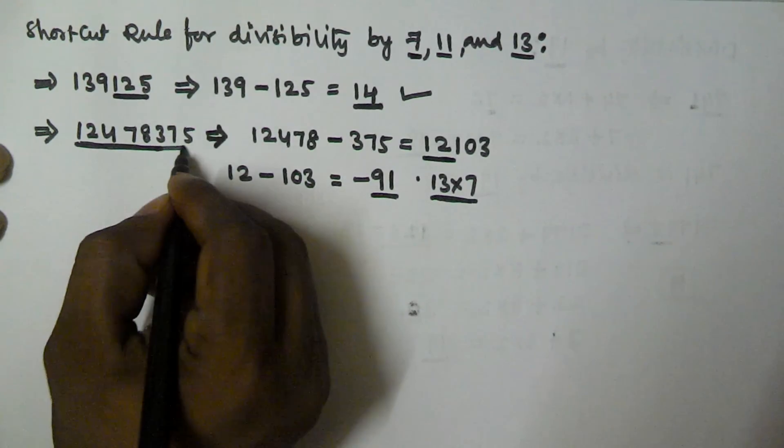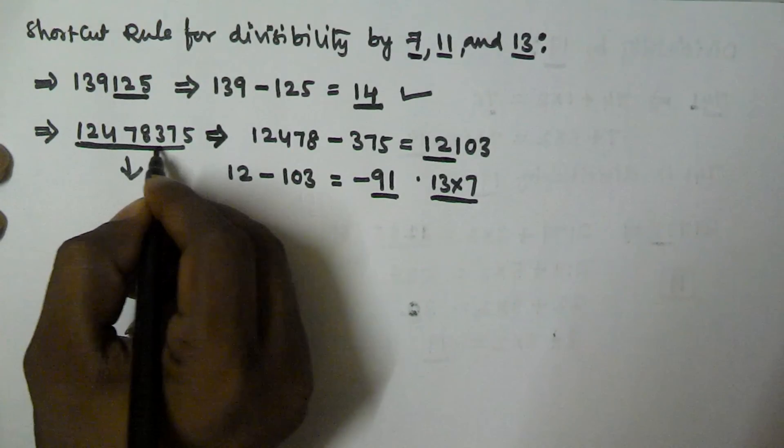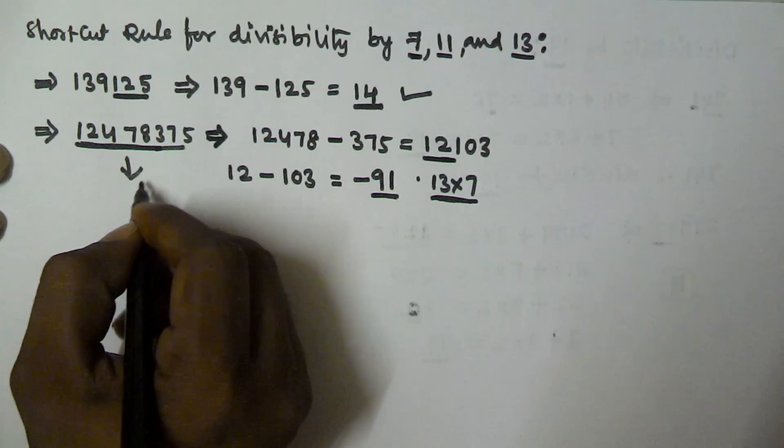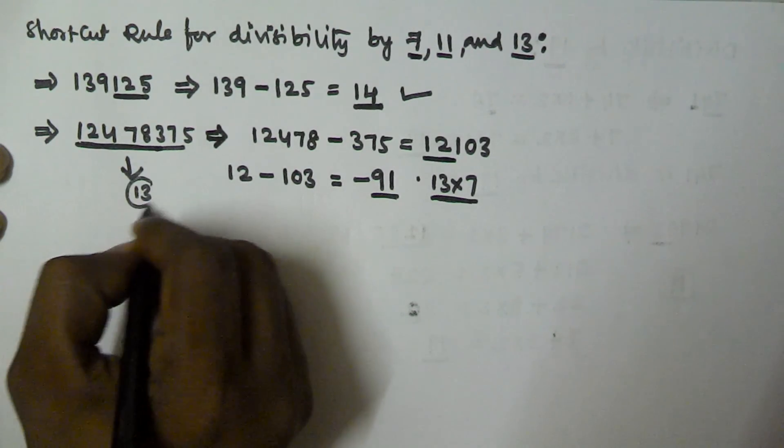So the given number 12478375 is divisible by 13.